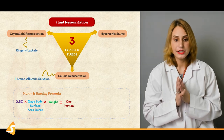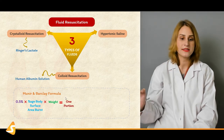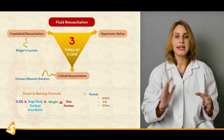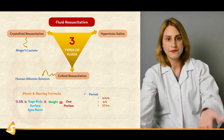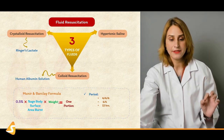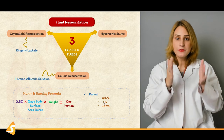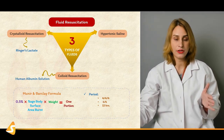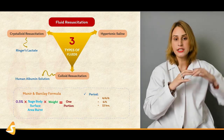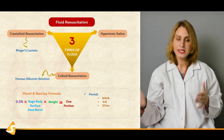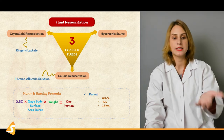For calculation of colloids, we have the Muir and Barclay formula: 0.5 × TBSA burned × weight of the patient = one portion. Whatever TBSA you have calculated by the Wallace Rule of Nines, multiply by the weight and multiply by 0.5 — whatever comes is one portion of the colloid fluid. Initially, give that one portion every 4 hours, three times; then every 6 hours, two times; then every 12 hours — each portion of that colloid fluid calculated by the Muir and Barclay formula.